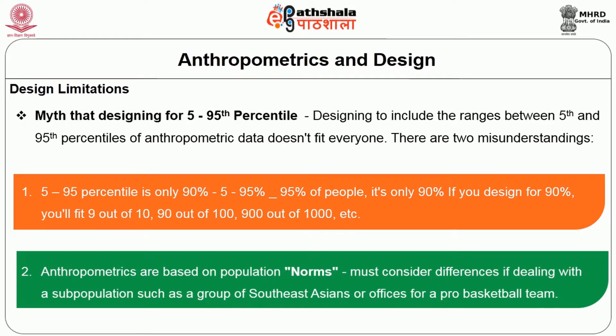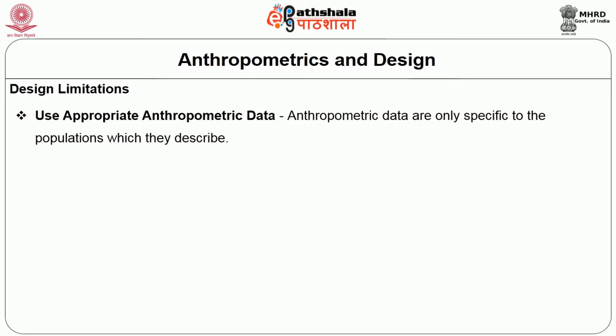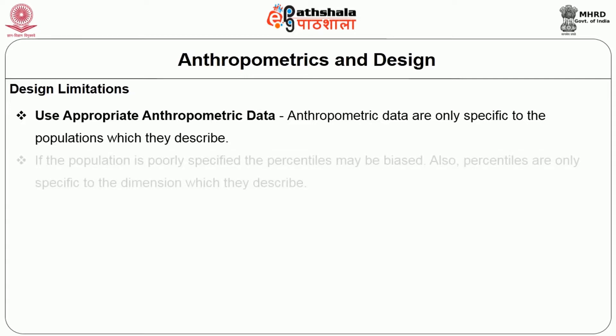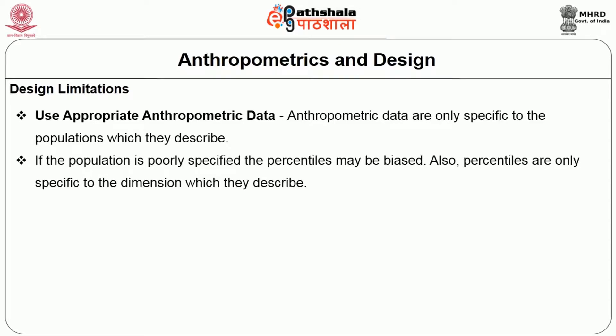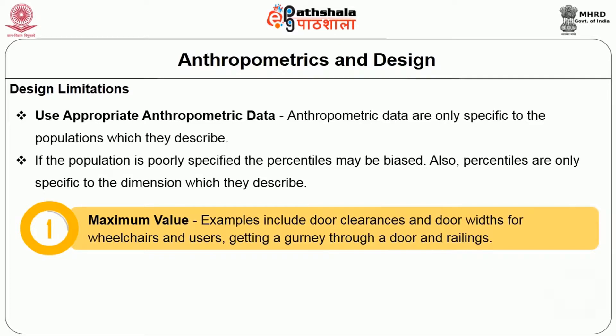Anthropometrics are based on population norms. You must consider differences when dealing with sub-populations such as a group of Southeast Asians or offices for a pro basketball team. Regarding appropriate anthropometric data: anthropometric data are specific to the populations they describe — if the population is poorly specified, the percentiles may be biased. Percentiles are only specific to the dimensions they describe. Maximum value examples include door clearances, door width for wheelchair users, getting a gurney through a door, and railings.